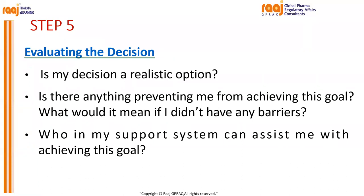Evaluating the decision: Is my decision a realistic option? Is there anything preventing me from achieving this goal? What would it mean if there were no barriers? For example, if you want to do an MBA alongside a PhD, consider the time, money, and dedication required. How you evaluate yourself and take decisions is up to you. Always think about these five steps and go ahead.